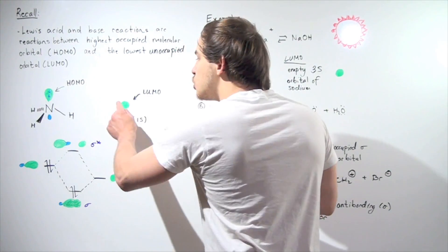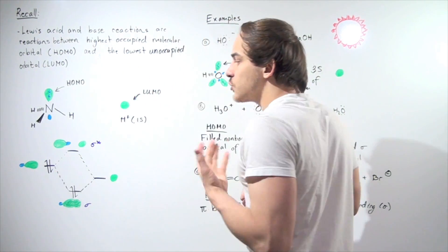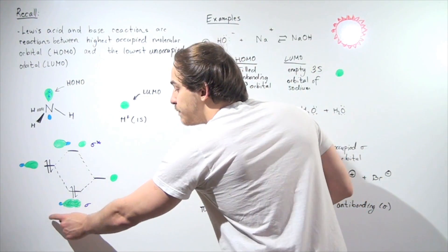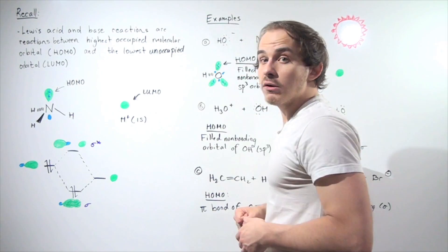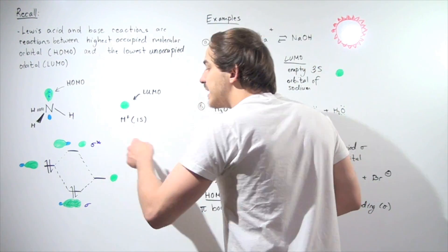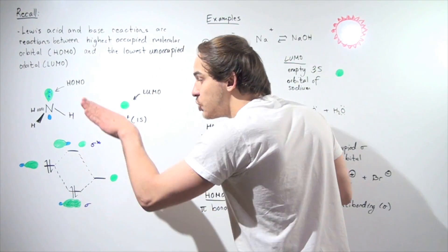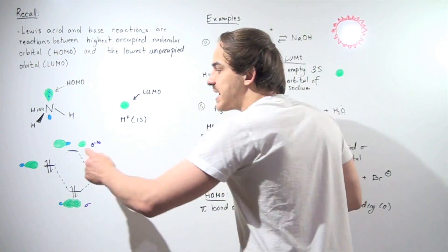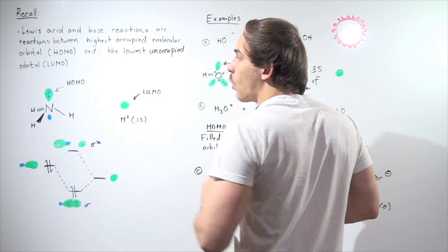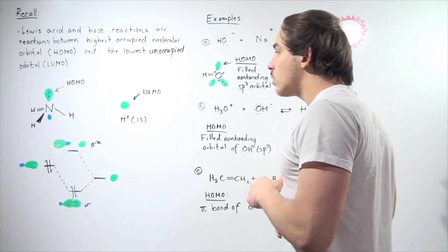When these two orbitals interact — the sp3 interacting with the 1s — we form two orbitals: the bonding molecular orbital and the anti-bonding molecular orbital. Since the bonding orbital is lower in energy, the electron pair coming from the highest occupied molecular orbital goes directly into this bonding molecular orbital.